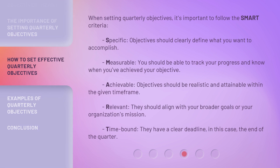When setting quarterly objectives, it's important to follow the SMART criteria. Specific: objectives should clearly define what you want to accomplish. Measurable: you should be able to track your progress and know when you've achieved your objective. Achievable: objectives should be realistic and attainable within the given time frame. Relevant: they should align with your broader goals or your organization's mission. Time-bound: they have a clear deadline — in this case, the end of the quarter.